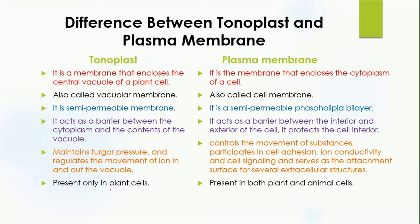The last difference is that the tonoplast is present only in plant cells, because the large vacuole is only found in plant cells. The plasma membrane, on the other hand, is present in both plant and animal cells because it protects the cytoplasmic content of the cell. That was all about the difference between tonoplast and plasma membrane.